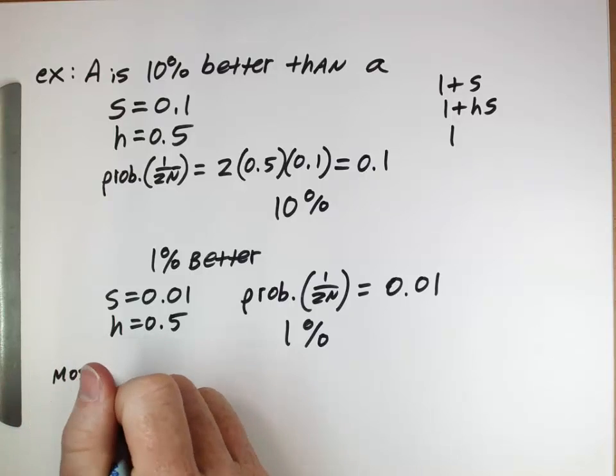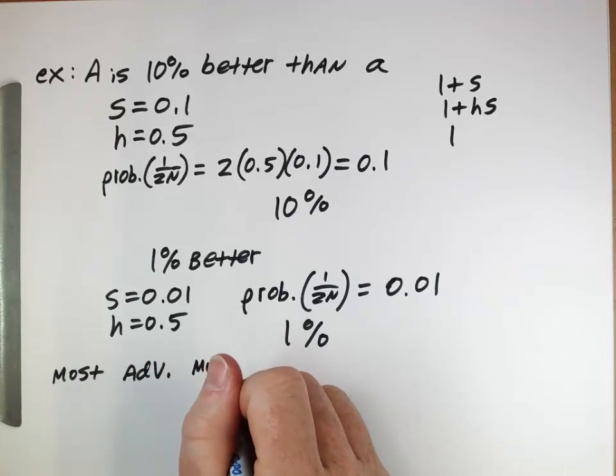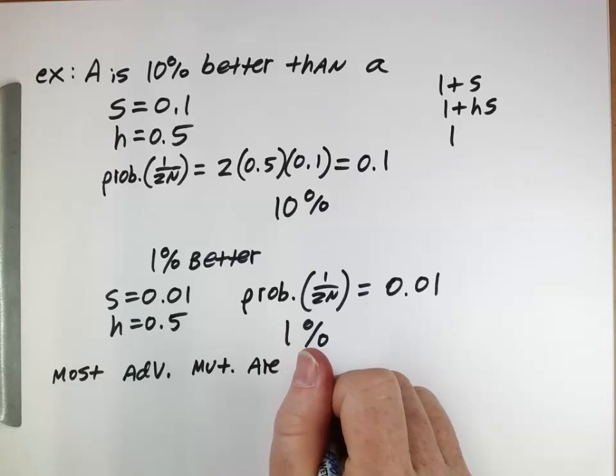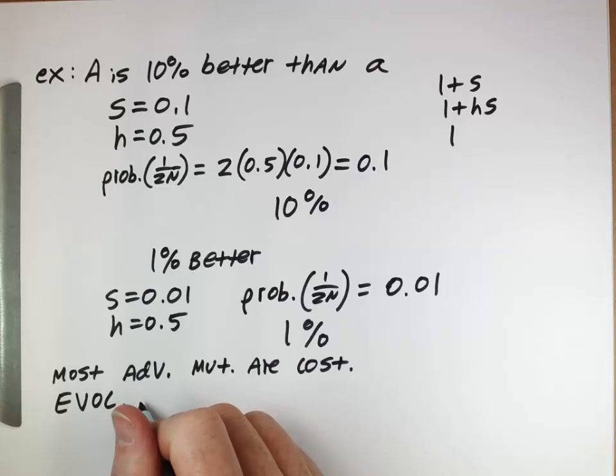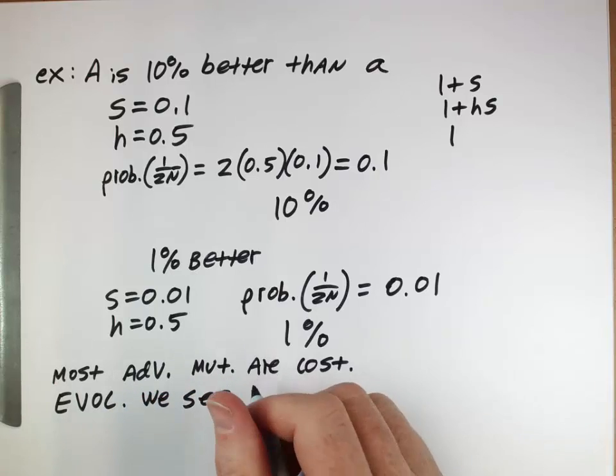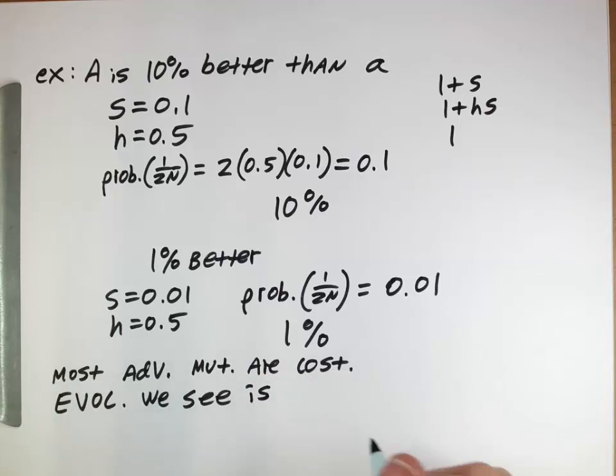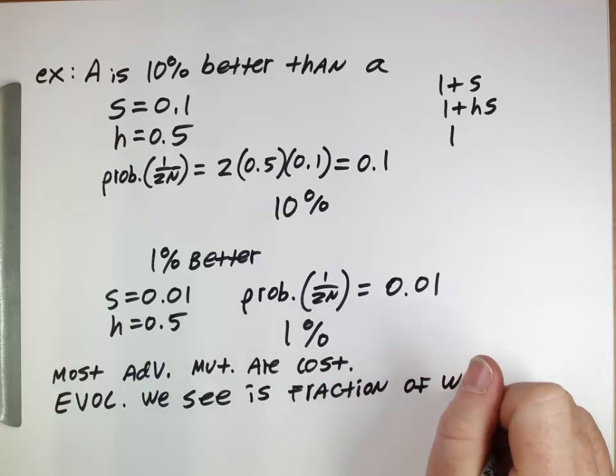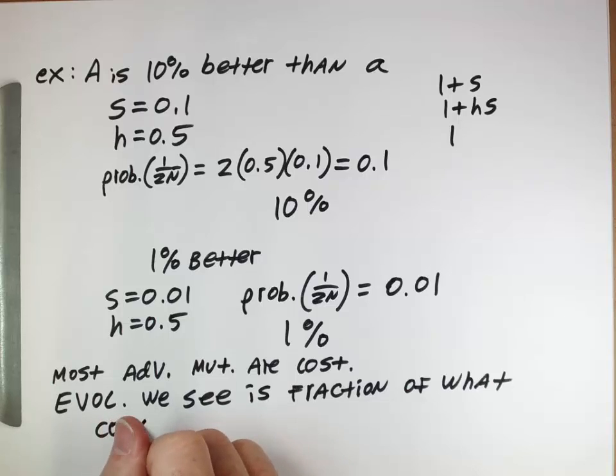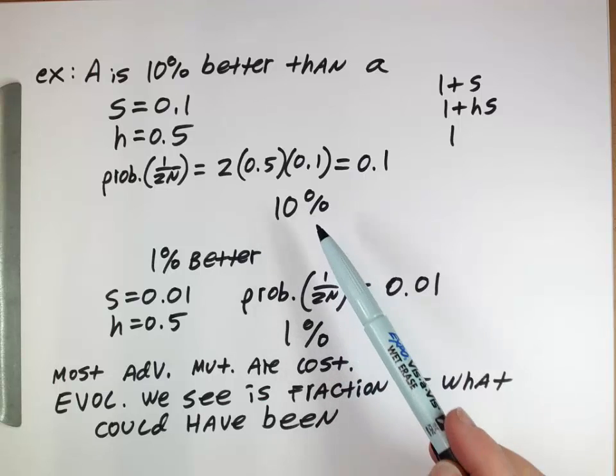What to me is the most striking implication of this is that the evolution that we see, the evolution that has occurred on Earth throughout all of history, it's actually only a fraction of what could have been over history. A large number of advantageous mutations that would be adaptations if they became fixed were lost just due to stochasticity and random chance.